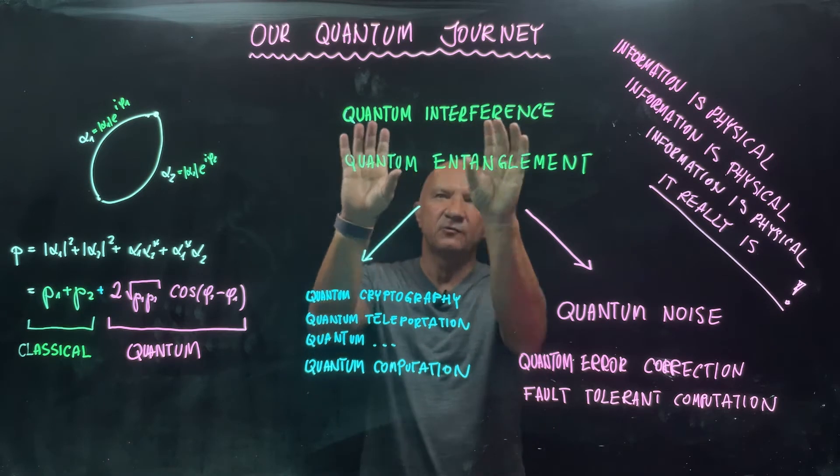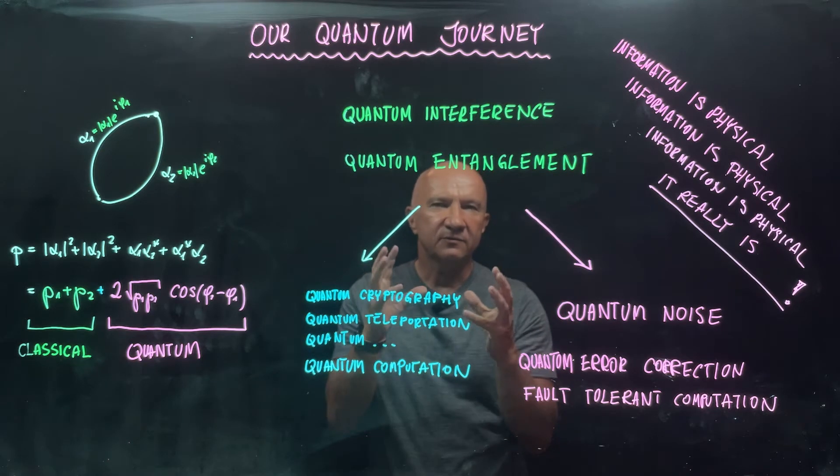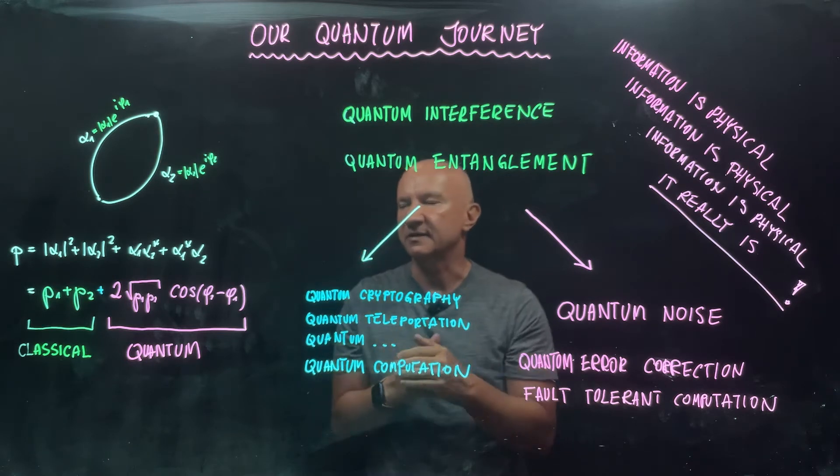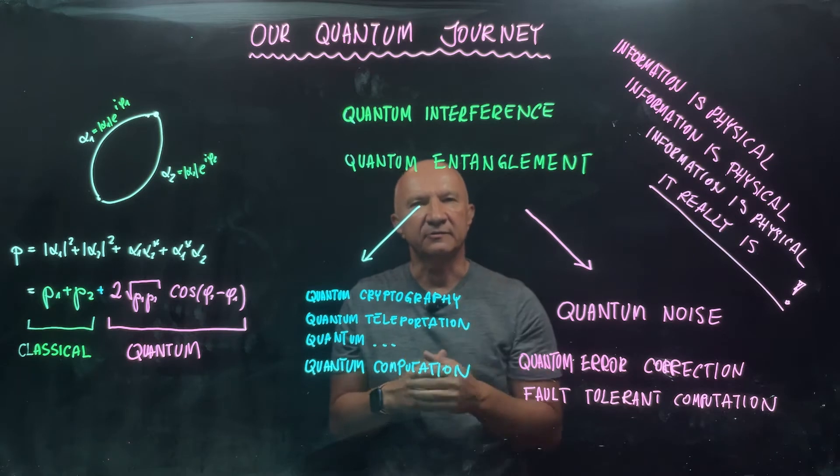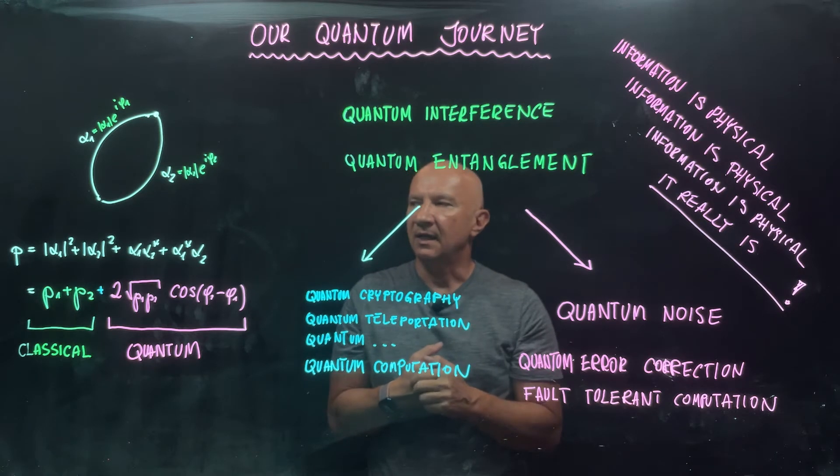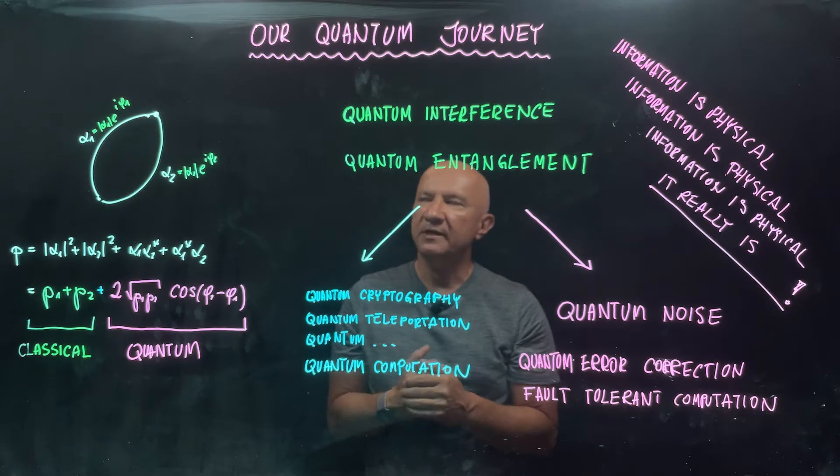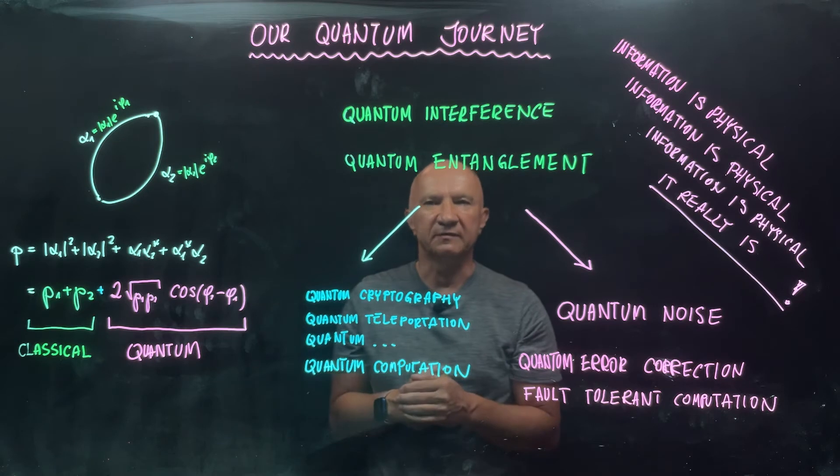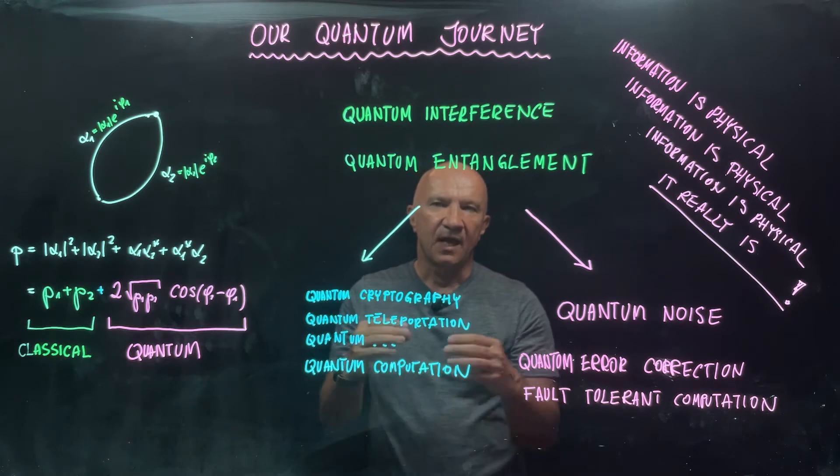So we talk about quantum interference, quantum entanglement, and I try to show to you where quantum information science, actually where quantum physics differs from classical description of the world. And one way of showing this was to point to classical probability theory and then to quantum physics and compare the two.